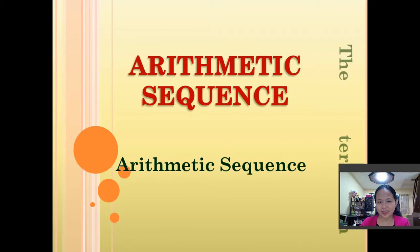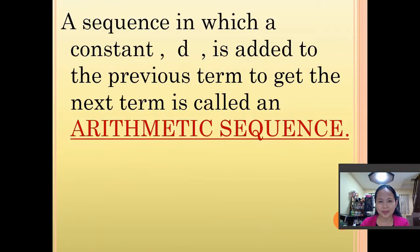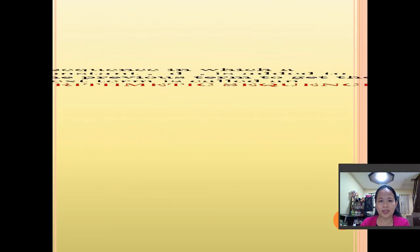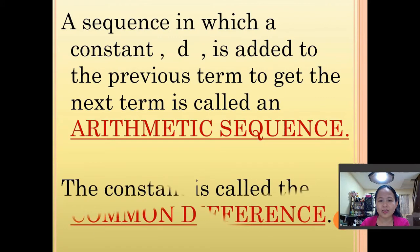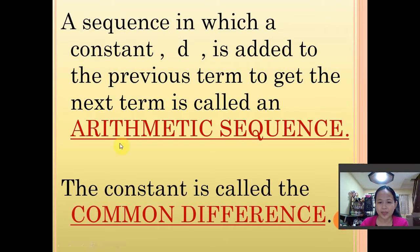Arithmetic sequence. Another subtopic for arithmetic sequence is the end term of an arithmetic sequence. A sequence in which a constant D is added to the previous term to get the next term is called an arithmetic sequence, and that constant is called the common difference, represented by D.